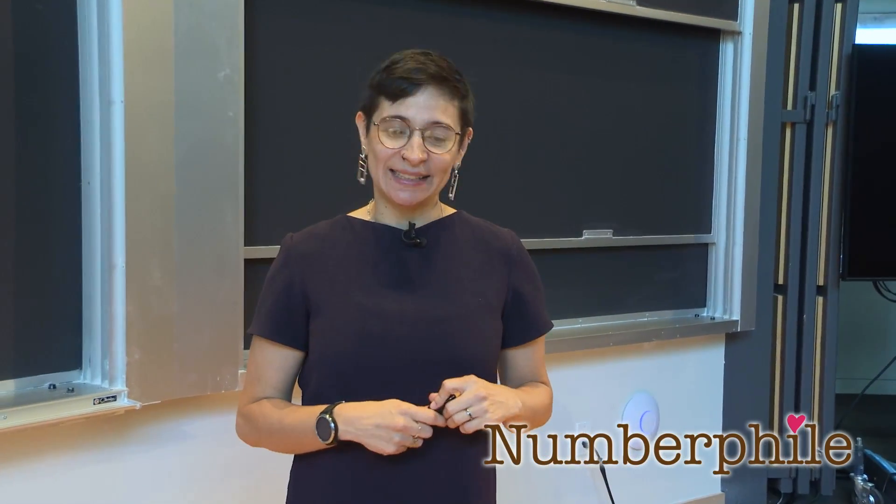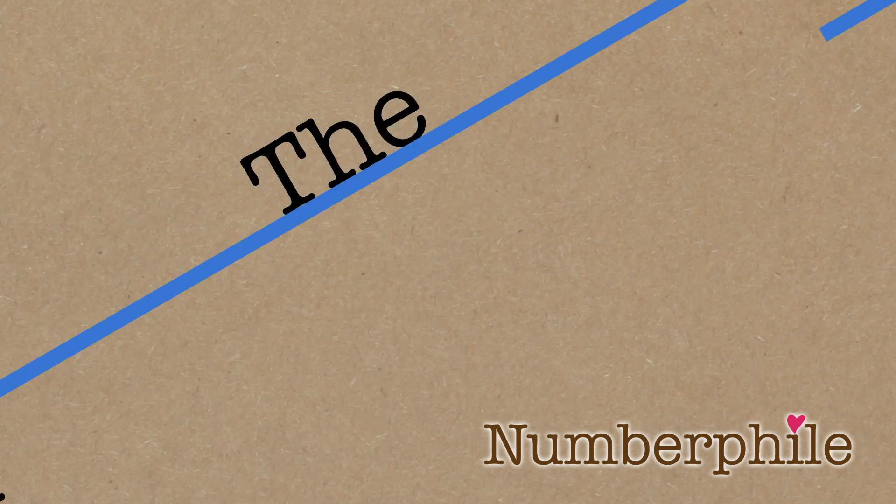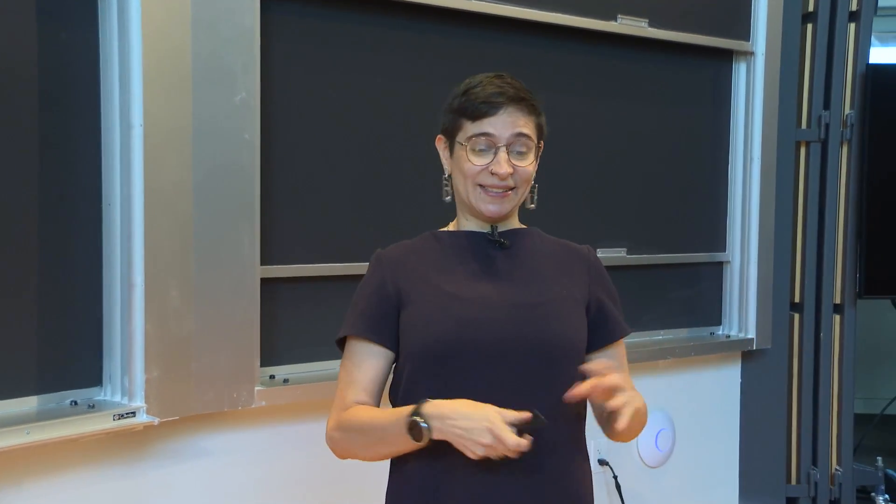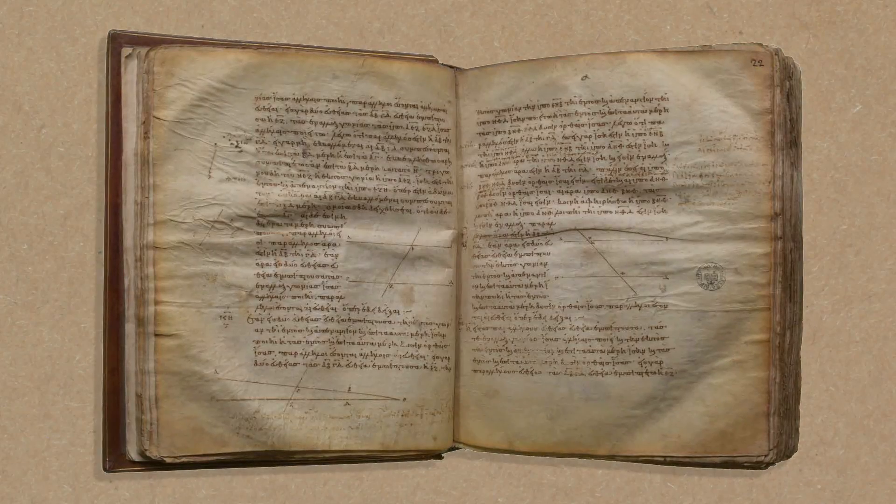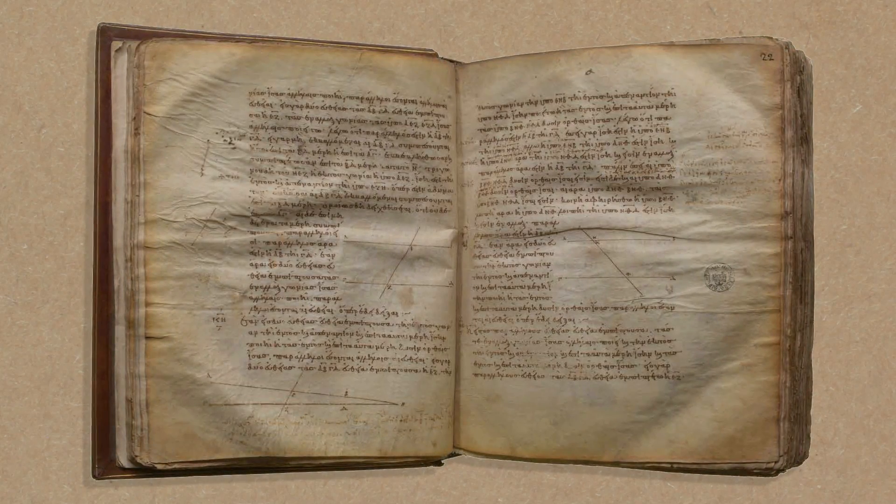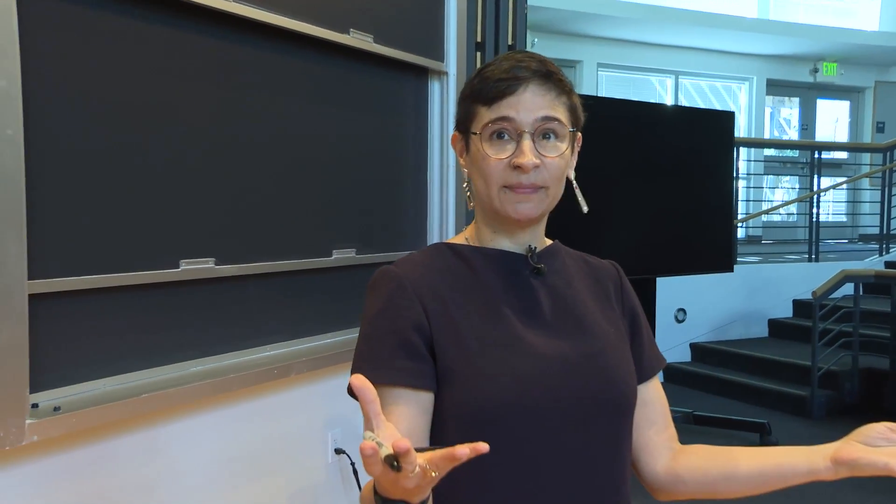Today I am going to tell you about the parallel postulate in geometry. Let me start by telling you what it is. So this originally appears in Euclid's Elements, published 300 BC. It's what we inherited as geometry.